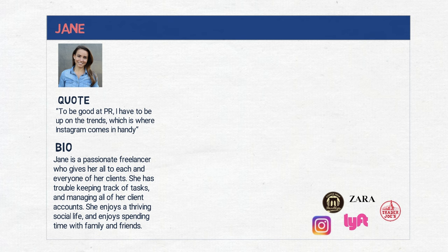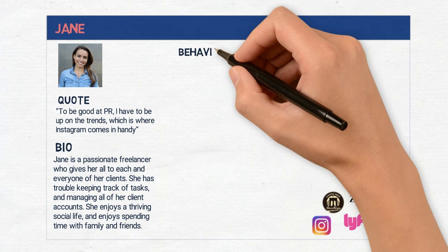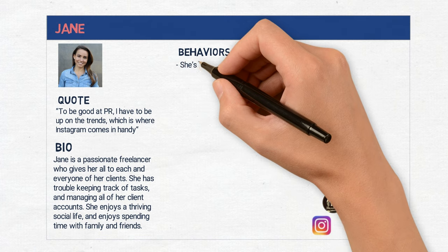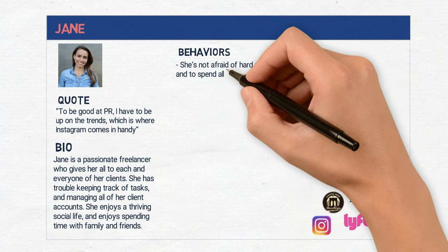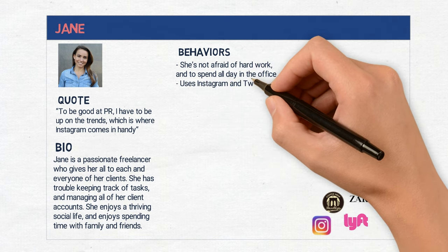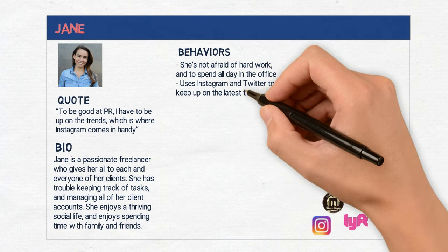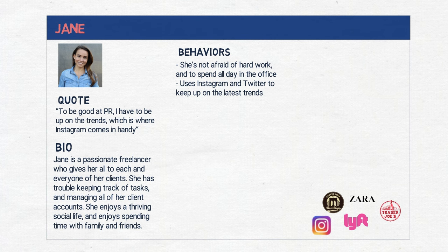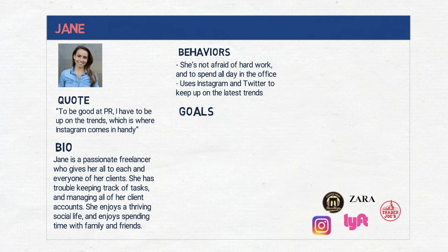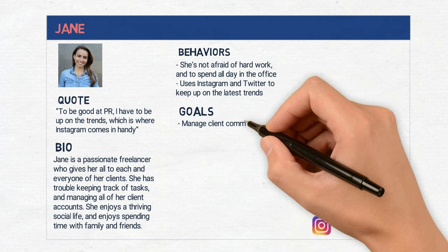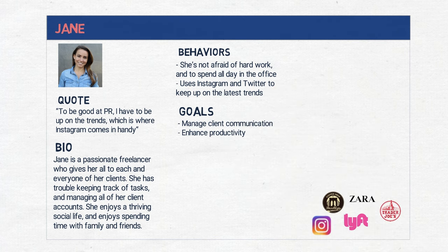Next, you should add beliefs and behaviors. For example, Jane, the freelance PR professional, says she'll do whatever it takes to protect her client. She's not afraid of hard work and to spend all day in the office jumping from client to client. She uses Instagram and Twitter to keep up on the latest trends. Next, you should outline your persona's goals. It is important to understand their aspirations since you want your product or service to fit into those goals. Jane is driven by creating the most value for her clients. She wants to be there whenever they call, even if that means spreading herself too thin.